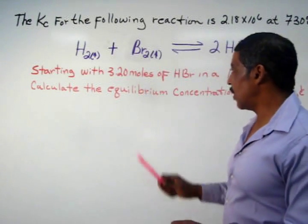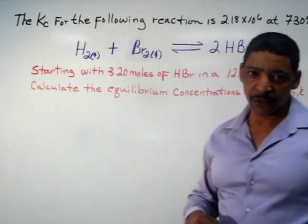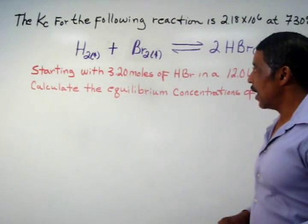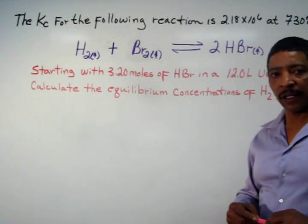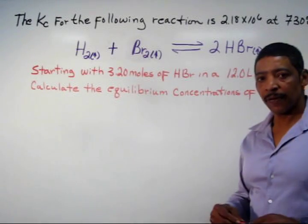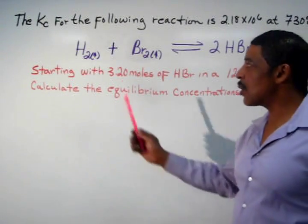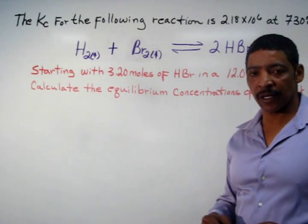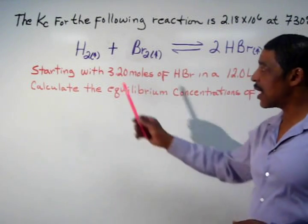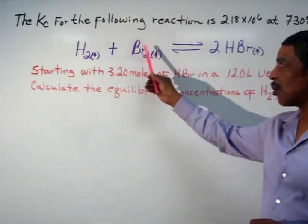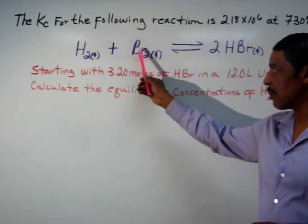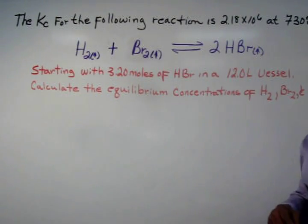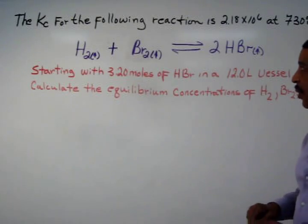This reaction will remain in equilibrium unless a stress is imposed on the system. This is known as Le Chatelier's principle. According to Le Chatelier's principle, a system in equilibrium will remain in equilibrium until a stress is imposed. For example, suppose more hydrogen gas was added to the system at equilibrium. The system would adjust by consuming more bromine; therefore, the amount of bromine will decrease and more HBr will be produced.